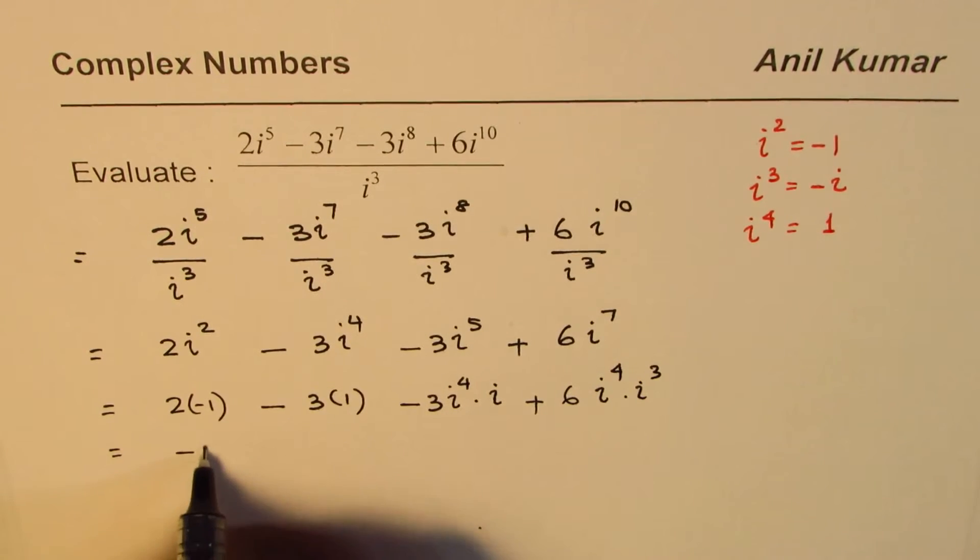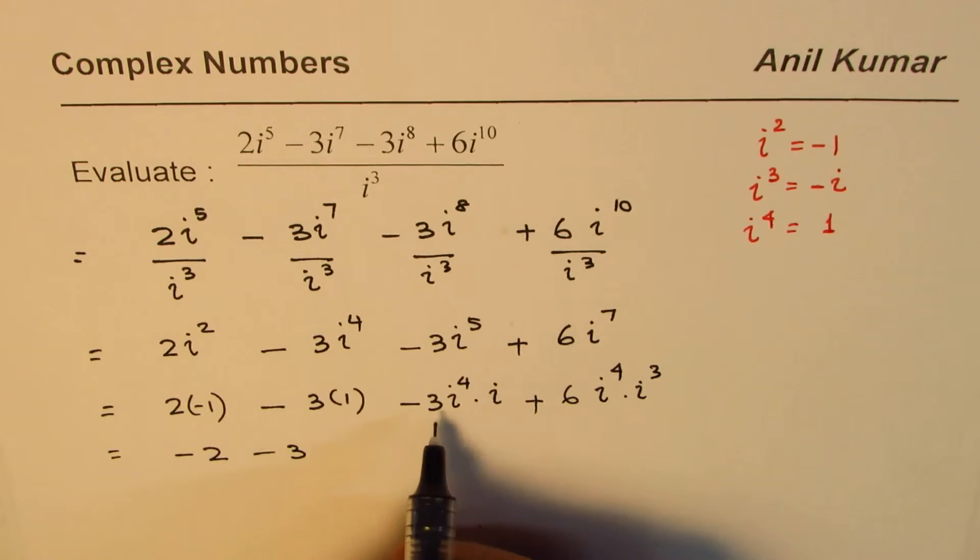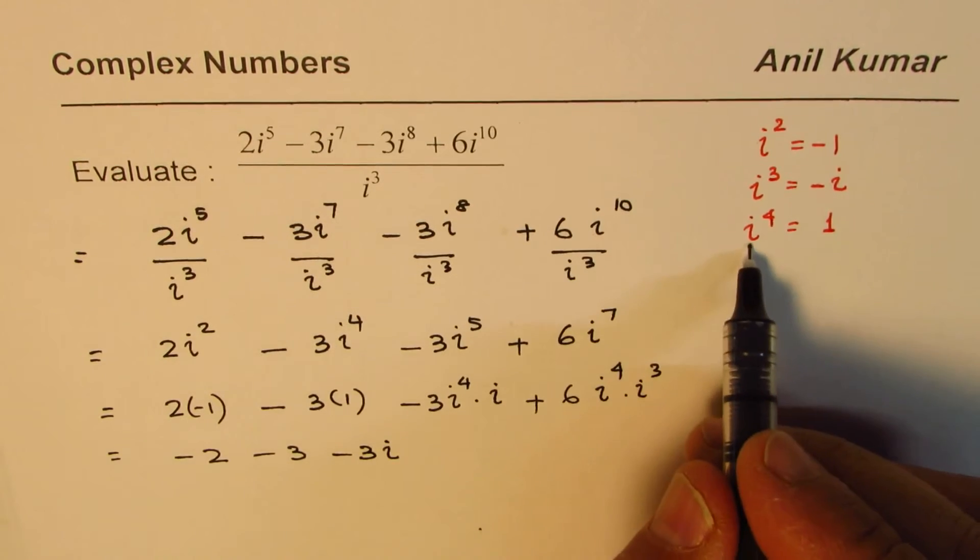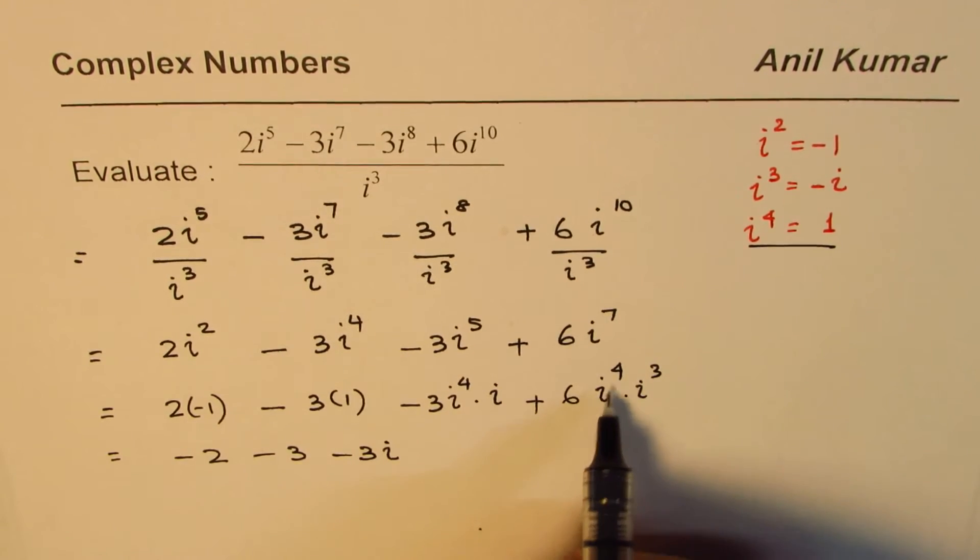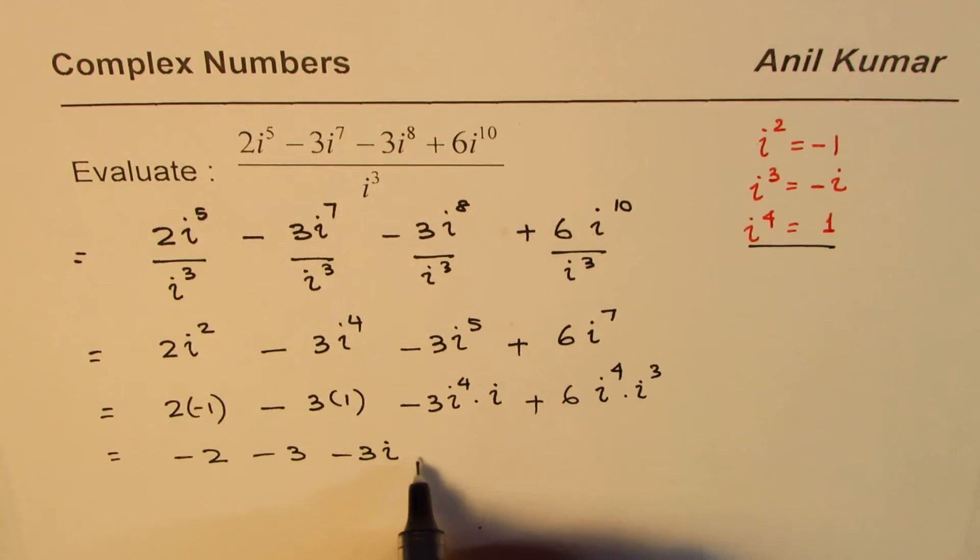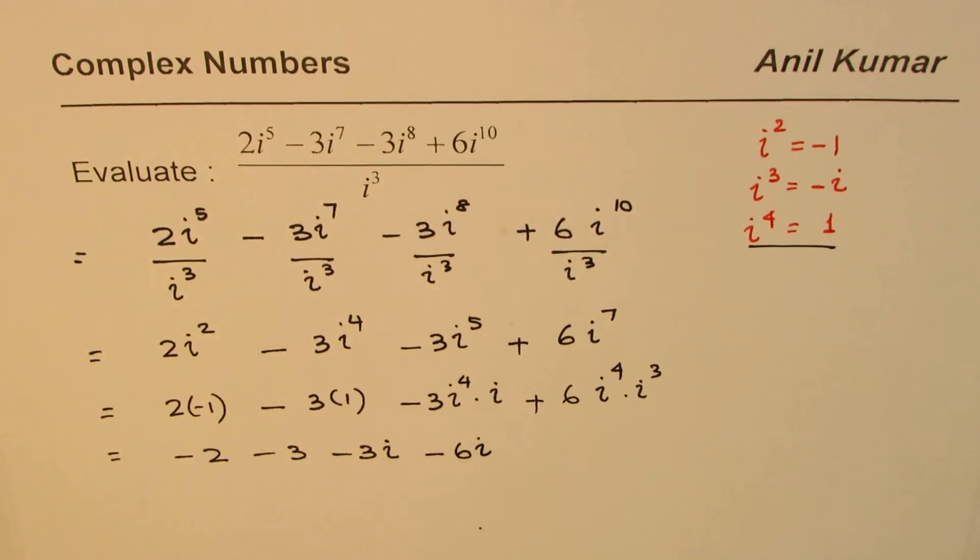Okay, so here we have -2 - 1. This gives us i^4 is 1, so we could write this as -3i. Since i^4 is 1, and i^3 is -i, that becomes -6i. Is that okay?